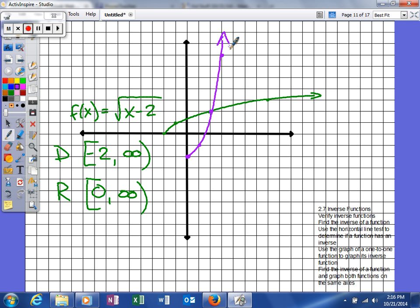And as you can see that inverse function, the domain is actually going to be 0 comma infinity. And your range for the inverse function will be negative 2 comma infinity.